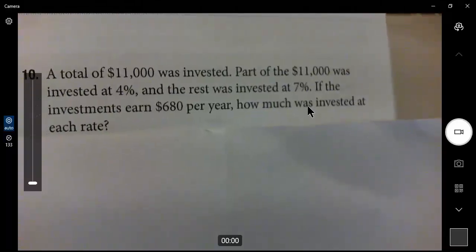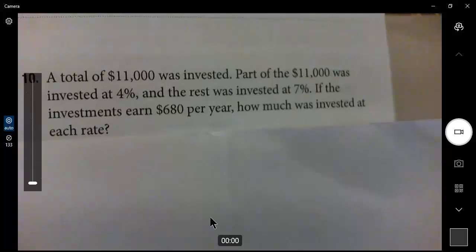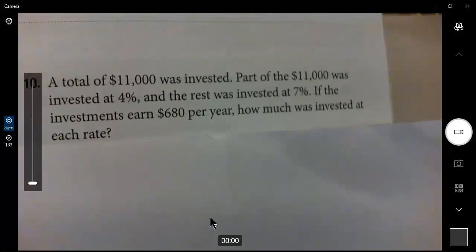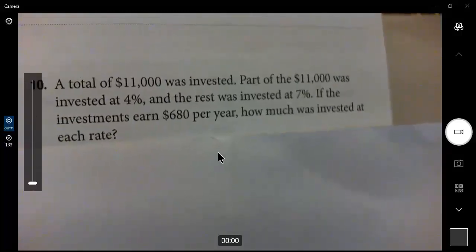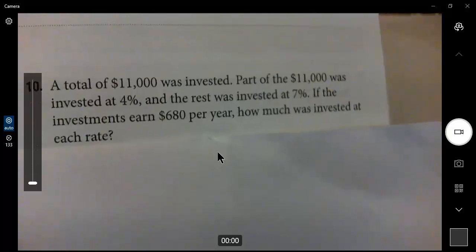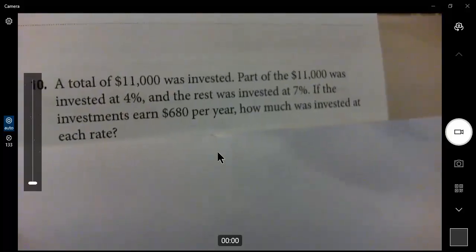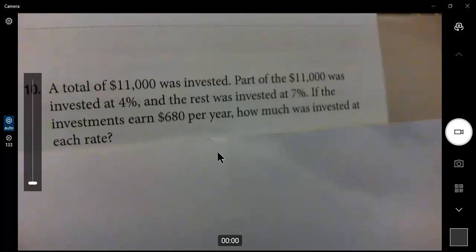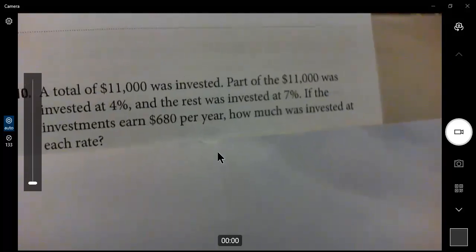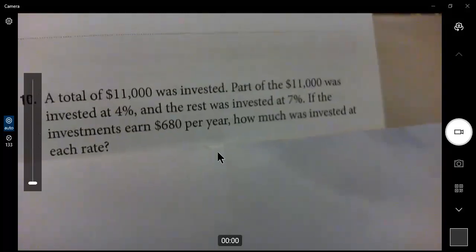Okay, so the total of $11,000 was invested, part of the $11,000 was invested at 4%, and the rest at 7%. If the investments earned $680 in interest per year, total interest, how much was invested at each rate?